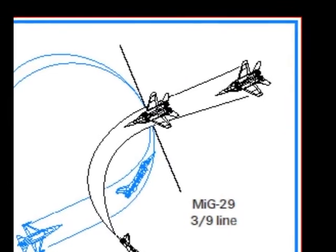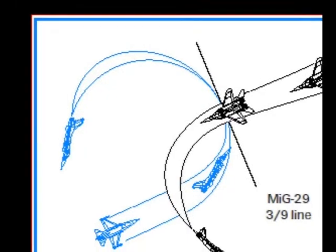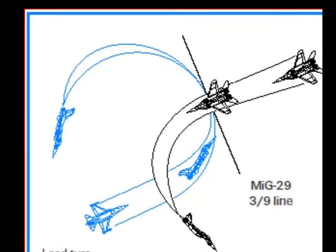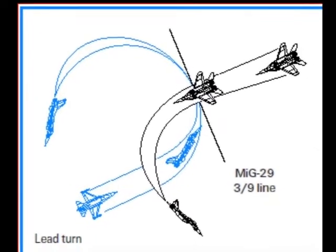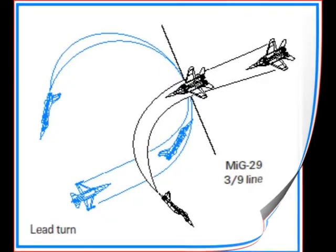Hold your new plane of motion for 3 to 5 seconds, then make another plane of motion change by rolling another 90 degrees and pulling. Continue to do these maneuvers at idle power until you get down to 150 knots.